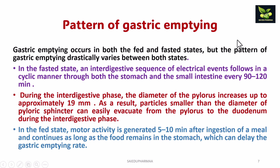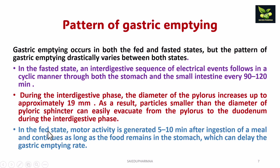Now, what is the pattern of gastric emptying? Gastric emptying occurs in both fed and fasted states, but the pattern varies between them. In the fasted state, an interdigestive sequence of electrical events follows in a cyclic manner through both the stomach and small intestine every 90 to 120 minutes. During the interdigestive phases, the diameter of the pylorus increases up to approximately 19 mm, allowing particles smaller than the pyloric sphincter diameter to easily evacuate to the duodenum. In the fed state, motor activity is generated 5 to 10 minutes after ingestion of a meal and continues as long as food remains in the stomach, which can delay the gastric emptying rate.